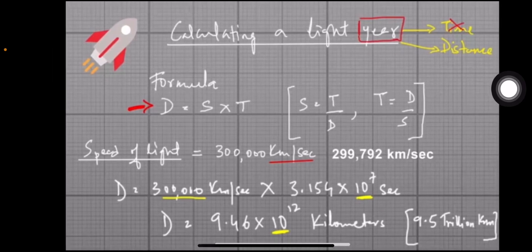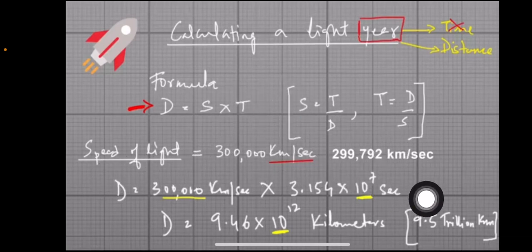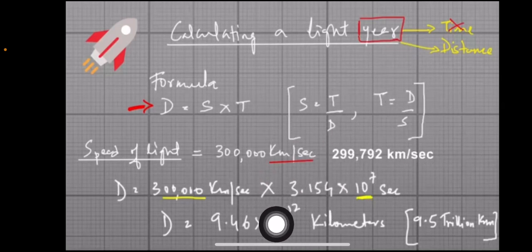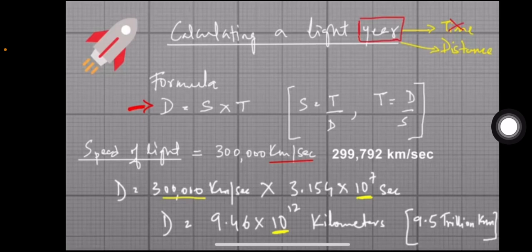So, if we calculate the light year using the distance formula — speed of light multiplied by the number of seconds in a year — we get approximately 9.5 trillion kilometers. That's it, guys. Thank you for watching, spread and share knowledge. Thank you.